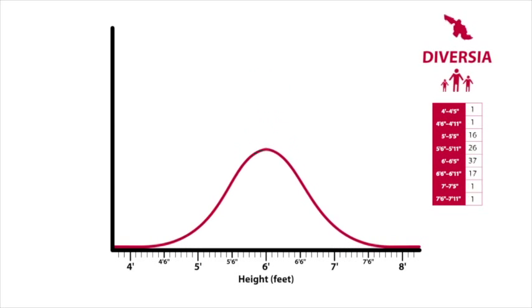Next, Diversia. This time, the height values fall across a wider range between 4 foot and 7 foot 11 inches, with fewer men having similar heights. In this example, the range of data collected is shallow and wide, resulting in a flatter distribution curve.